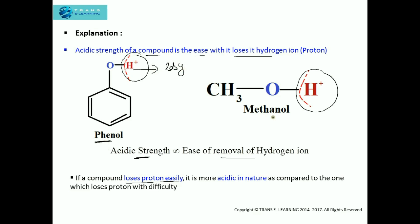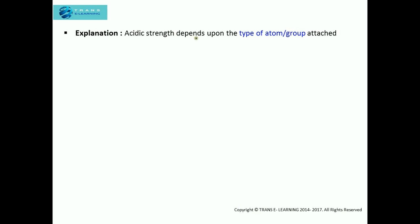But what is the reason behind it? For that, we have to understand on what factors the acidic strength and the ease of removal of hydrogen ion depends. The acidic strength depends upon the type of atom or group attached to the compound.